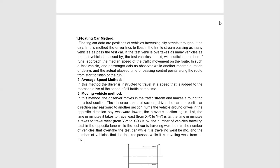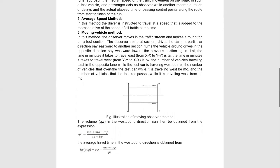Next is the Moving Vehicle Method. The test vehicle makes a round trip on the test section. This is the test section — we start from one end and go in the east direction, then return from yy to xx in the west direction. We start the stopwatch going from xx to yy in the east direction, and then yy to xx in the west direction.